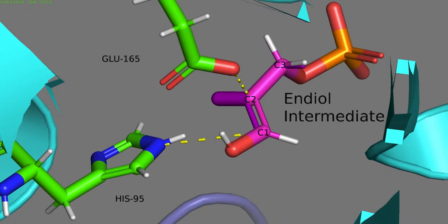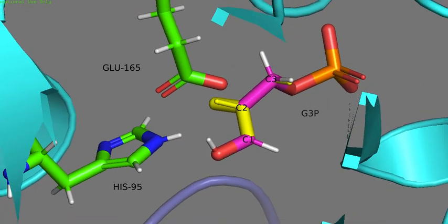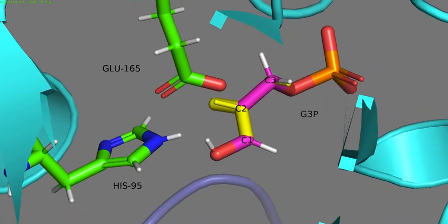From there, the G3P is able to effectively enter the next step in the glycolytic pathway. The same reaction takes place in reverse, proceeding with the same endiol intermediate. With either product forming, both active site residues are completely returned to their original forms and the enzyme is flawlessly regenerated.